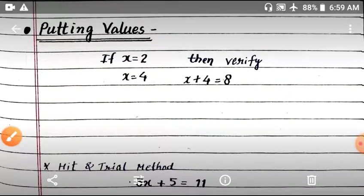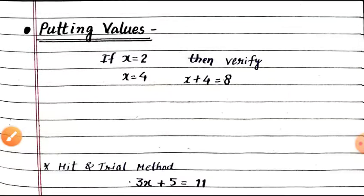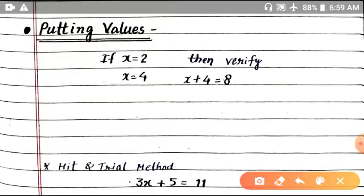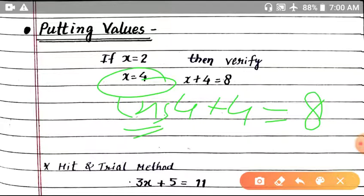Let's try the other number. If we keep x equal to 4, then here x is 4 plus 4, so this value is 8. We can say that x equal to 4 works. In this way, we keep putting values in equations to verify. I hope you have understood.